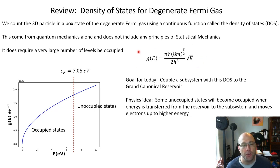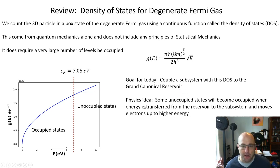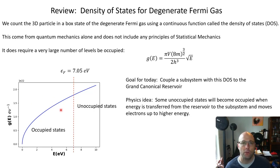Rather than thinking about any individual state for the degenerate Fermi gas, we understand that we have a density of states as a continuous function, and now we're going to couple those states to a reservoir within the grand canonical ensemble picture. The basic idea is that in the quantum problem, states below the Fermi level are occupied and states above are unoccupied, but when you couple this system to a thermal reservoir and let it come to thermal equilibrium, some occupancies will change due to energy and particle exchange with the reservoir.